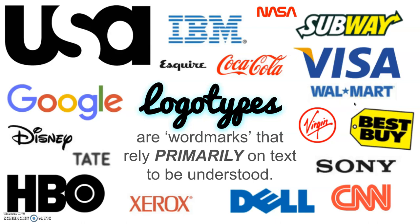Logo types are the exact opposite — they are visual designs of letter forms. Coca-Cola is probably the most famous logotype, but there are others you don't really think about like Subway, Visa, Walmart, Best Buy. These aren't just letters; these are arrangements of shapes within a certain position that really brand and help you identify the entity. Google and Disney are also very famous logotypes.